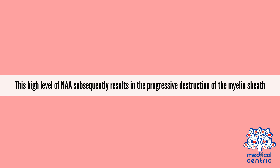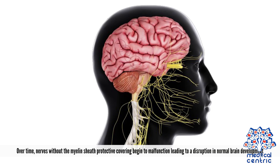This high level of NAA subsequently results in the progressive destruction of the myelin sheath. Over time, nerves without the myelin sheath's protective covering begin to malfunction, leading to a disruption of normal brain development.